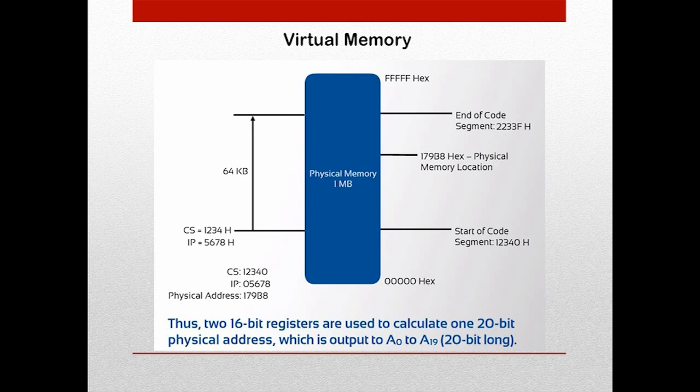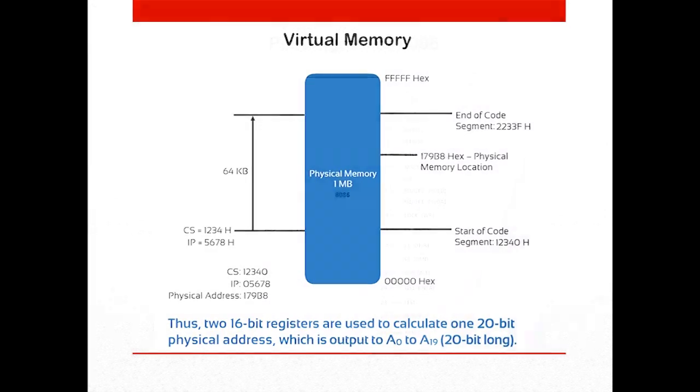The 8086 has 1 MB of memory space. For example, if the code segment points to 1234H, the physical address is calculated by translating 1234H into 12340H by the address compute engine. The instruction pointer value of 05678H is then added to the code segment value to get the final physical address of 179B8H.